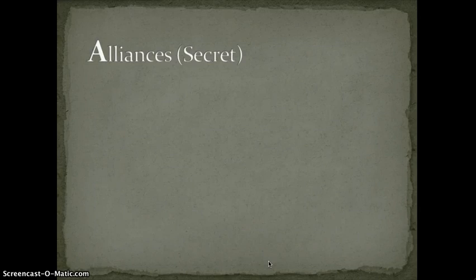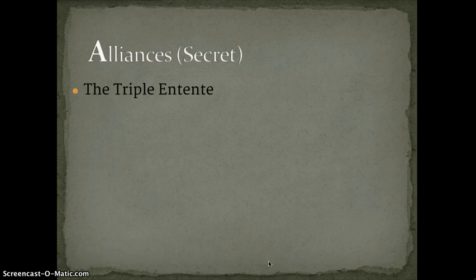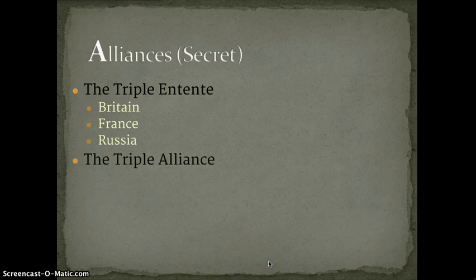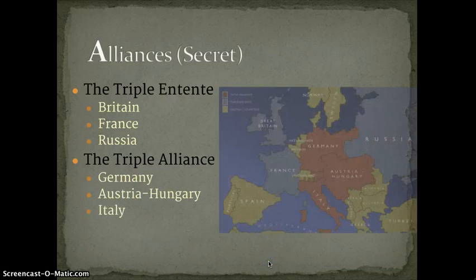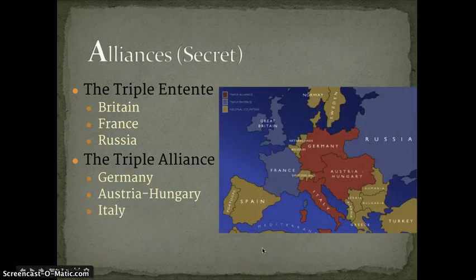The A in MAIN stands for alliances. Most of these were secret. Countries would try to work together and work against each other. They created two systems of alliances: the first being the Triple Entente, made up of Britain, France, and Russia; the other being the Triple Alliance, which was Germany, Austria-Hungary, and Italy. The rest of the nations were pretty much claiming neutrality, with some connections but no actual alliances. These alliances were secret — they weren't done in public.